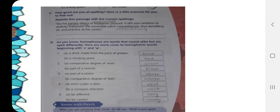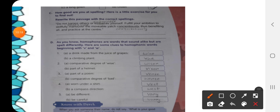Number 1A, a drink made from the juice of grapes. It is wine. It is called wine, W-I-N-E, wine. And a climbing plant, it is vine. It is V-I-N-E, vine. They sound almost same but their spellings are different.